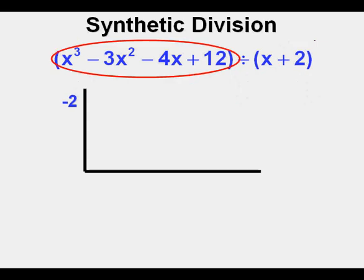Next we take the leading coefficients of this third degree polynomial and place them here inside the frame. And here they are, 1, negative 3, negative 4, and 12 in order.